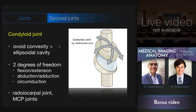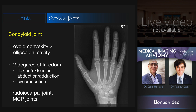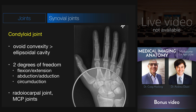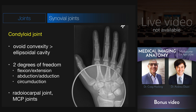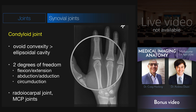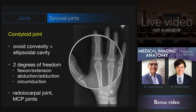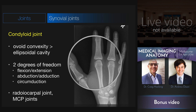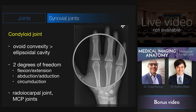The next type is the condyloid joint, very similar to the ball and socket joint. However, instead of a perfect spheroid articular surface, this has an ovoid convexity which articulates with an ellipsoidal cavity. This still allows flexion and extension, abduction and adduction, and therefore circumduction, but it doesn't allow axial rotation. The radiocarpal joint is a good example, with the ellipsoidal cavity of the distal radius articulating with the ovoid convexity of the scaphoid and the lunate. The metacarpophalangeal joints are also examples of condyloid joints.